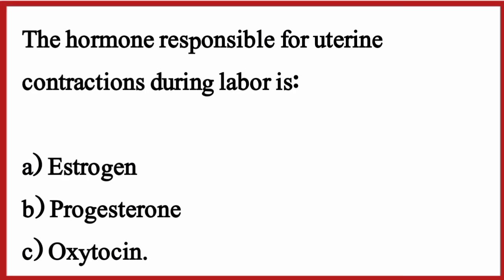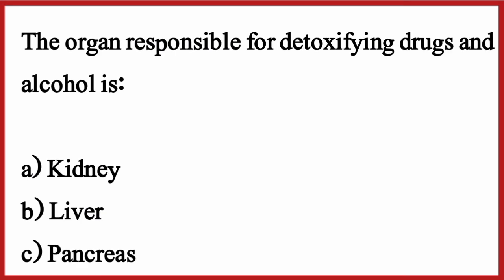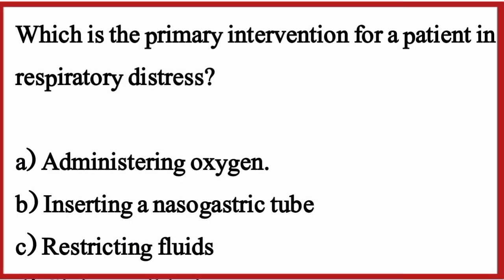The hormone responsible for uterine contraction during labor is — the correct option is option C: Oxytocin. The organ responsible for detoxifying drugs and alcohol is — the correct option is option B: Liver. Which is the primary intervention for a patient in respiratory distress? The correct option is option A: Administering oxygen.